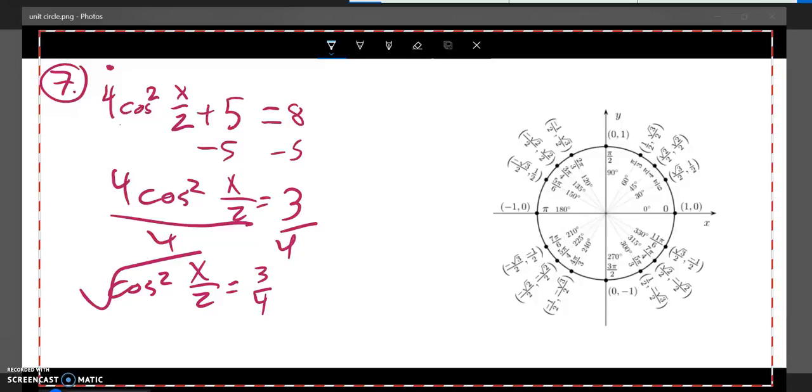This is cosine squared, so I'm going to square root both sides. As I square root both sides, remember plus or minus comes in with it. Root 3, squared of 4 is 2. So I have cosine of x over 2 equals plus or minus root 3 over 2.